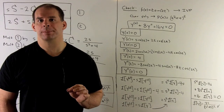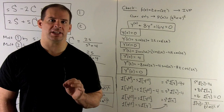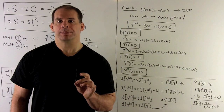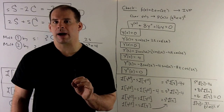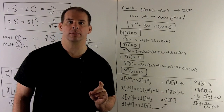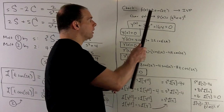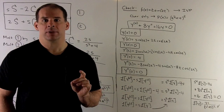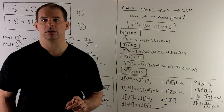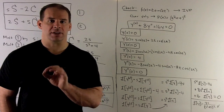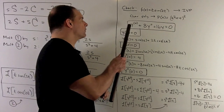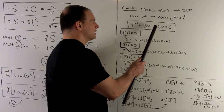To verify our answer, we find the initial value problem associated with f(t) = t·sin(2t). If we just had sin(2t), that would be a solution of the ODE y″ + 4y = 0, whose characteristic polynomial is s² + 4. Since we have a t in front, we increase the multiplicity by 1, making the new characteristic polynomial (s² + 4)². Expanding gives s⁴ + 8s² + 16, which corresponds to the ODE: y⁽⁴⁾ + 8y″ + 16y = 0.